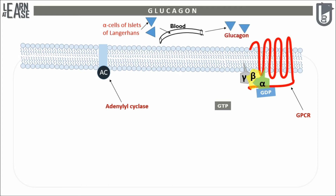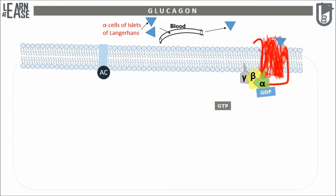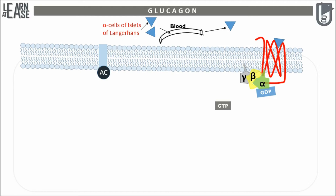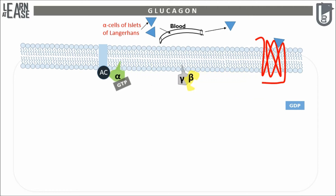When glucagon binds to GPCR, its conformation changes. This change allows the alpha subunit to replace GDP with GTP, which activates the cycle and eventually activates adenylate cyclase. Activated adenylate cyclase converts ATP to cyclic AMP, which is the second messenger. Cyclic AMP will further activate a cascade of reactions to induce the desired effect in the cell.